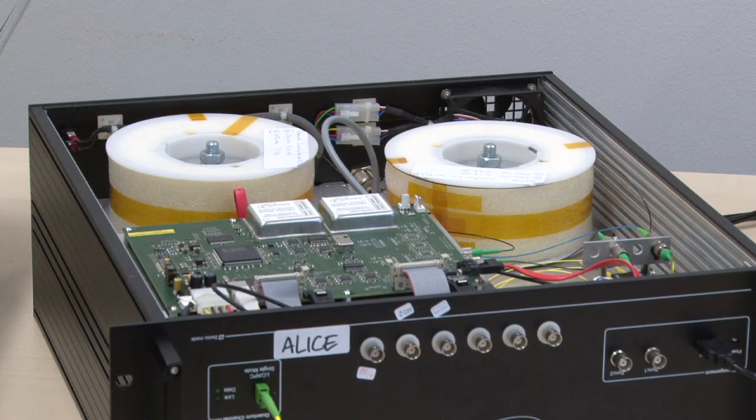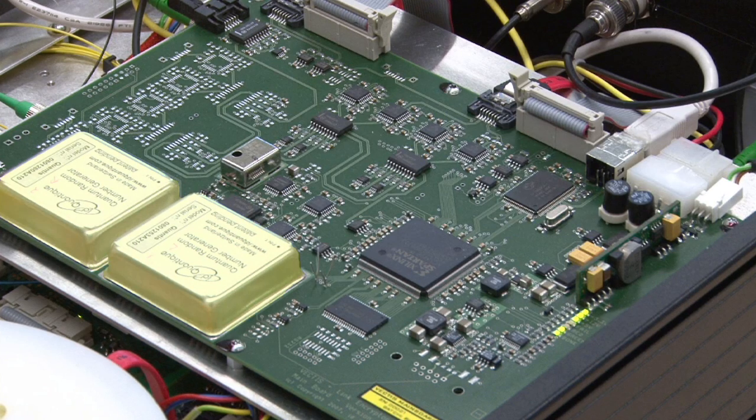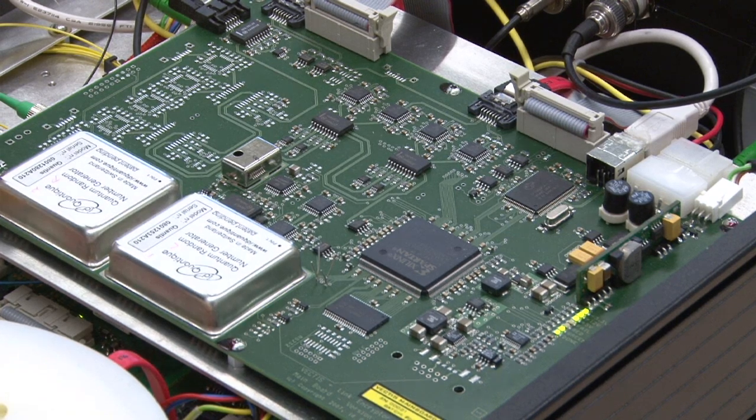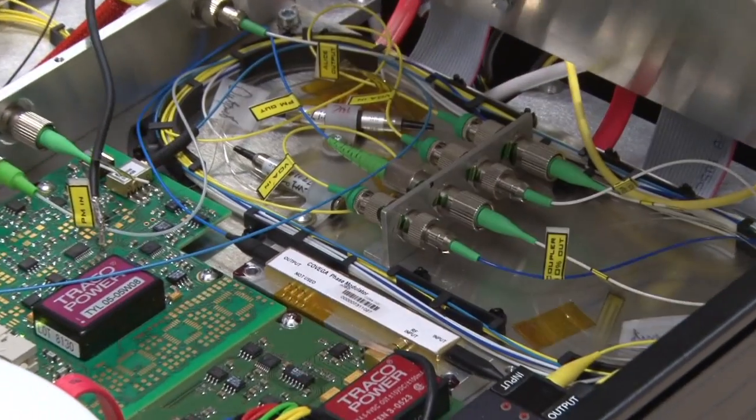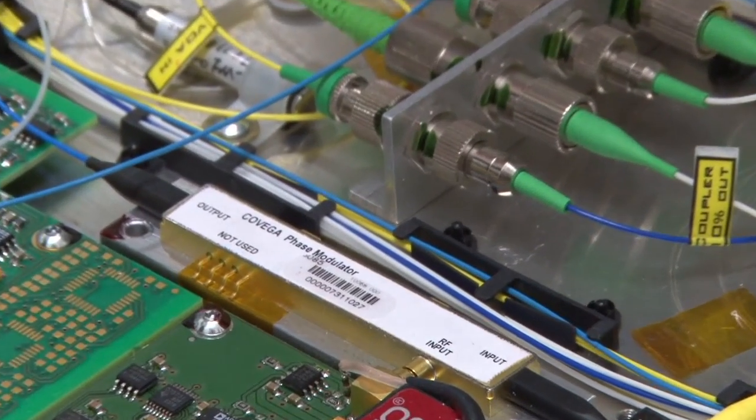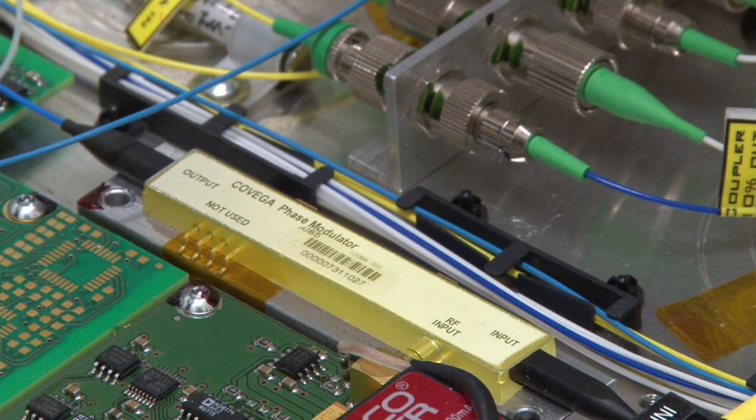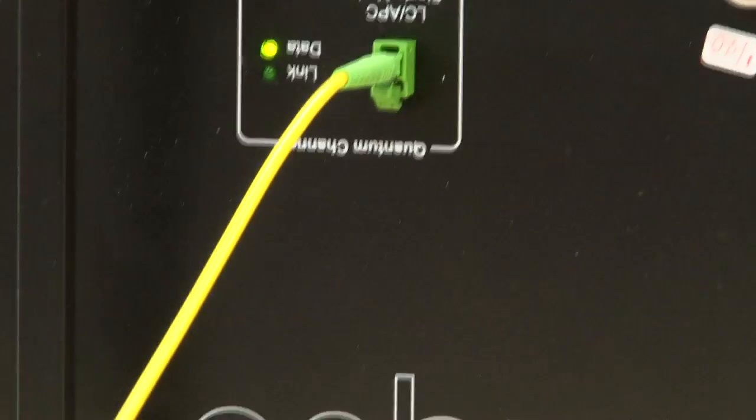The bit sequence in QKD needs to be random. So here you see two quantum random number generator modules that perform this task. Next to various optical and electronic components, you see the phase modulator that encodes the bit information on optical signals. These optical signals are sent by Alice.